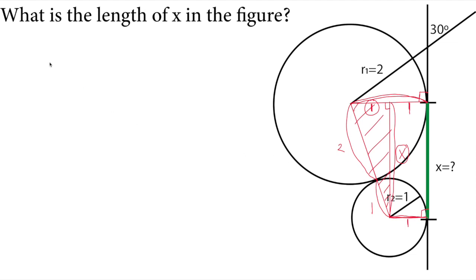The hypotenuse is two plus one, which is three squared, and the perpendicular lines are x squared plus one squared. So we have three squared equals x squared plus one squared. Nine equals x squared plus one.